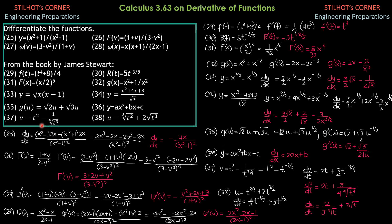Problem 37: V = (d² - 1)/(fourth root of d³). Rewriting: V = (d² - 1)/d^(3/4) = d² · d^(-3/4) - d^(-3/4) = d^(5/4) - d^(-3/4). Differentiating with respect to d: dV/dd = (5/4)d^(1/4) - (-3/4)d^(-7/4) = (5/4)d^(1/4) + (3/4)d^(-7/4). Rewriting: dV/dd = (5/4)d^(1/4) + 3/(4 · fourth root of d⁷).